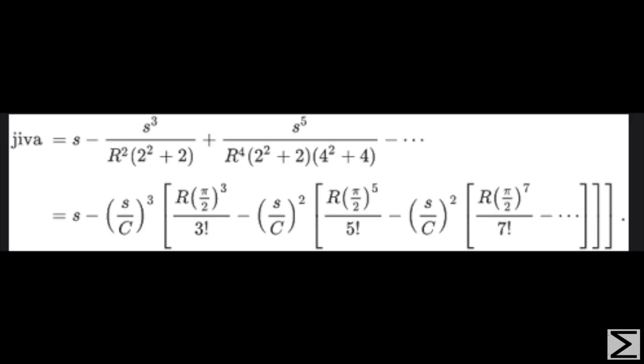Additionally, he discovered that theta is equal to the alternating infinite series: tan of theta minus tan of theta cubed over 3 factorial plus tan of theta to the fifth power over 5 factorial and so on and so forth.